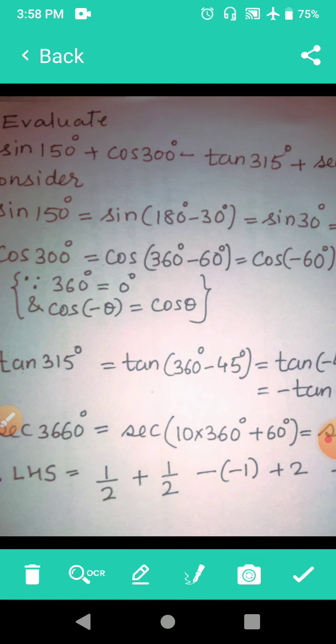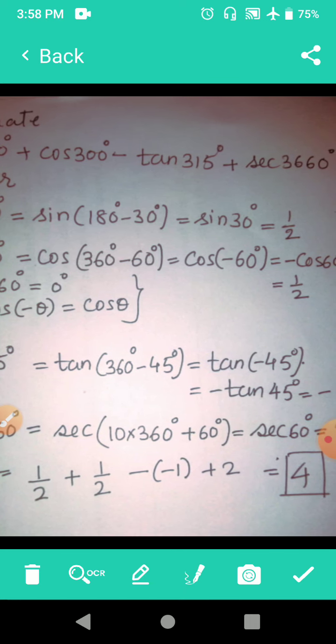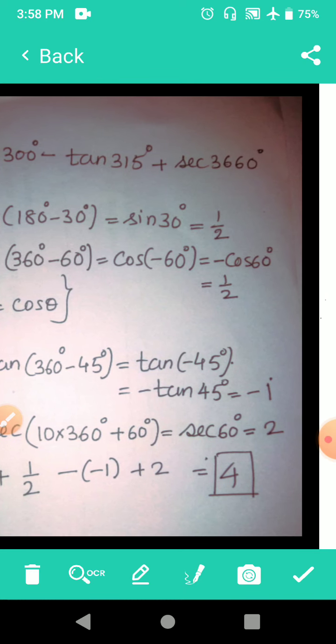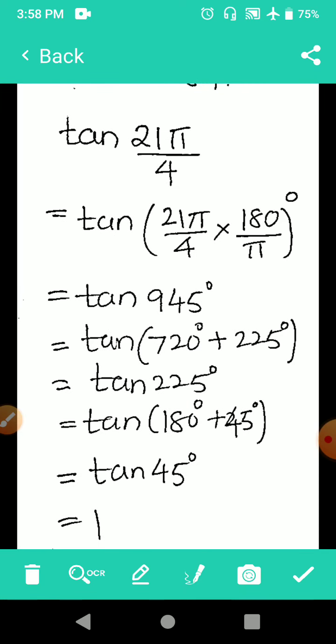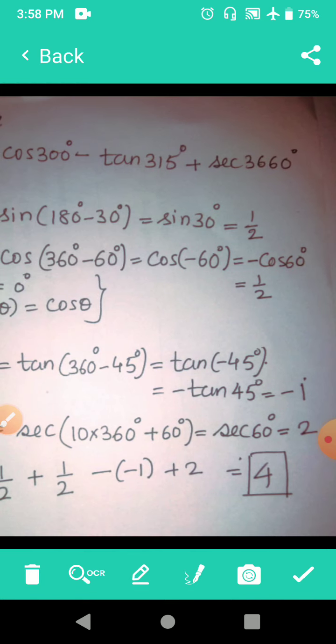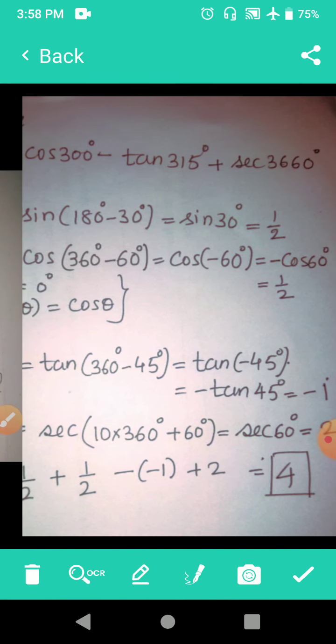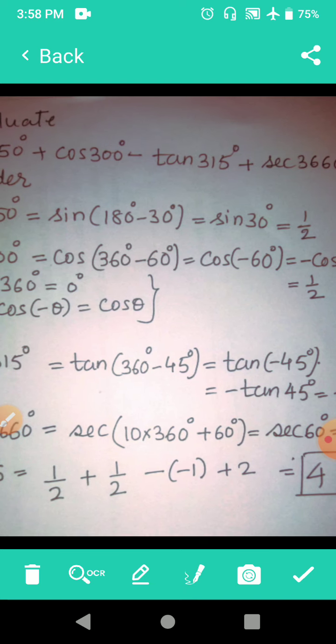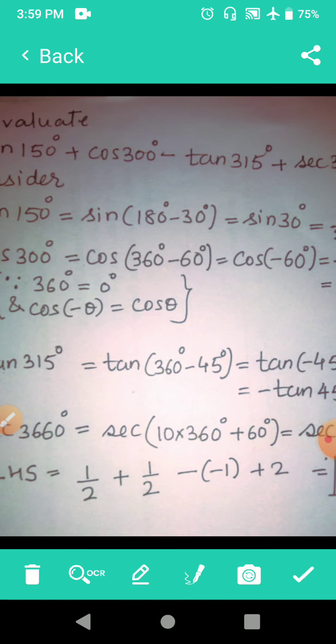Sec 3660 is equal to, now it's a very large angle, so sec of 10 × 360 degrees + 60 degrees. Now all the multiples of 360 are 0, so sec of 0 + 60 is equal to sec 60 is equal to 2.